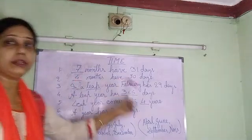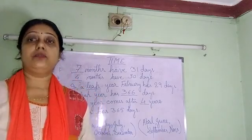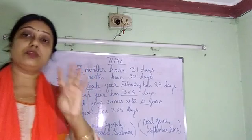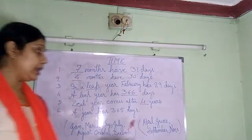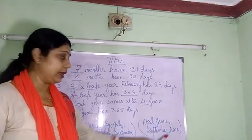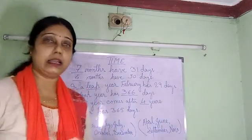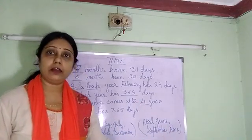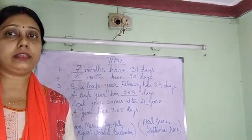4 months have 30 days. Out of 12 months, 4 months have 30 days. So which months have 30 days? They are April, June, September, and November. These are the 4 months having 30 days.